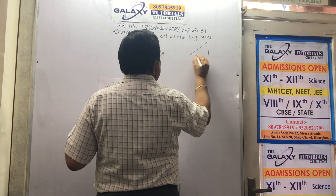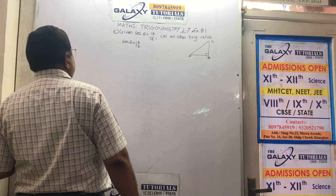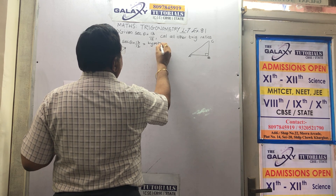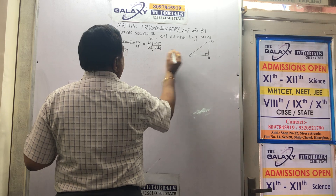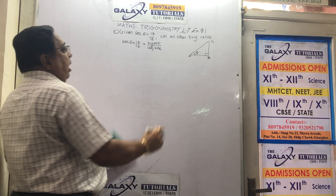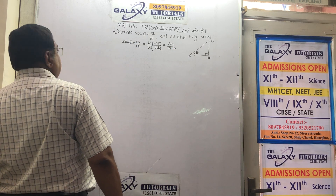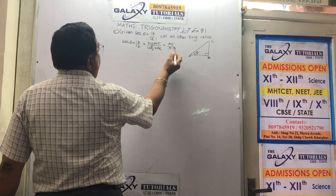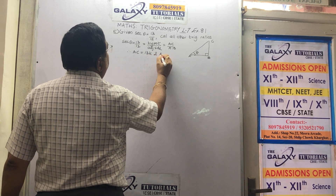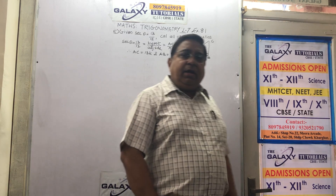We have sec θ = 13/12. I will draw my right angle triangle with vertices A, B, C. You know sec θ is 1 upon cos, so it equals hypotenuse upon adjacent side of A. We are interested in A; A is our theta. Hypotenuse is AC, adjacent side is AB. Let there be some common multiples of K. Therefore AC = 13K and AB = 12K. You can use x, n, or any alphabet you like.